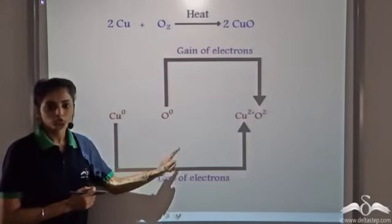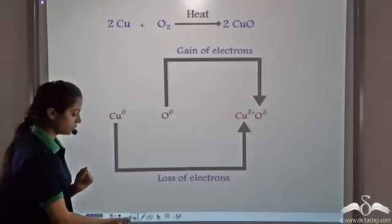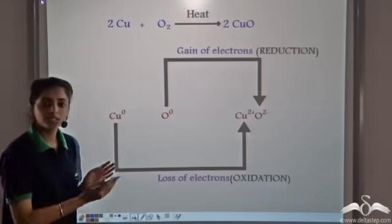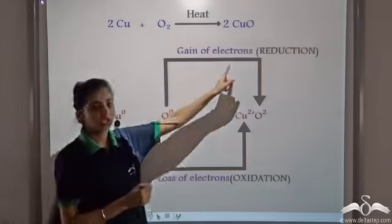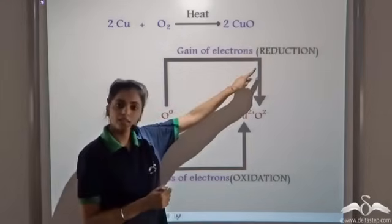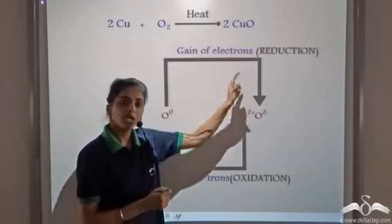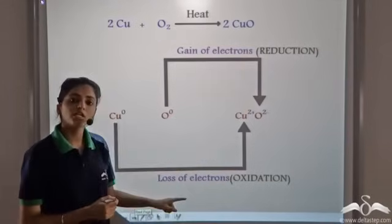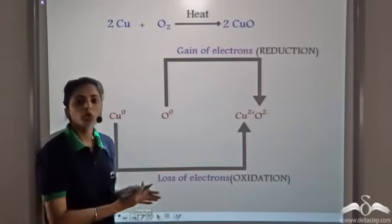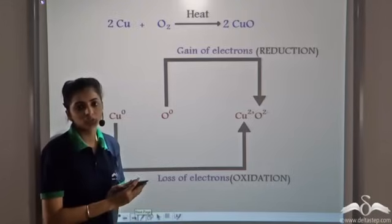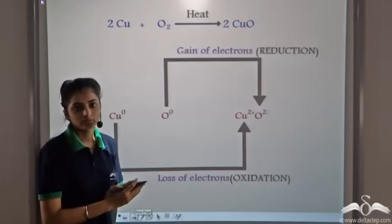So we know whenever there is a gain of electrons, we call that a reduction reaction. And whenever there is a loss of electrons, we call it an oxidation reaction.